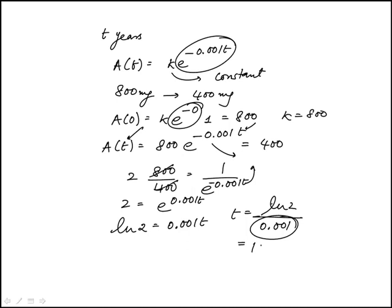0.001 is 1 over 1,000, and natural log of 2 is 0.693. So this would be 693 years, so that's answer choice C.